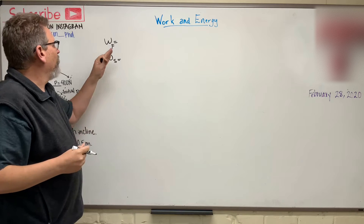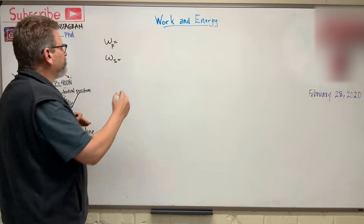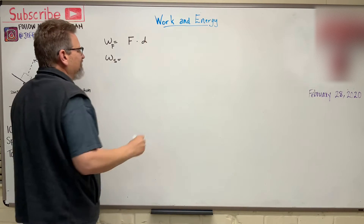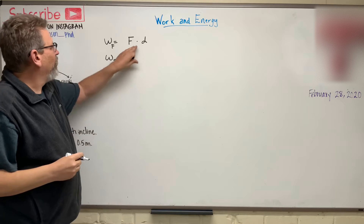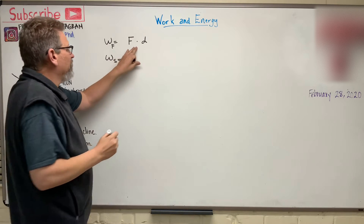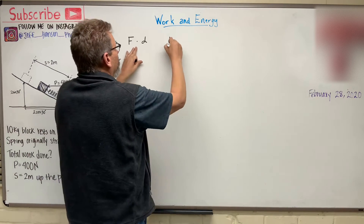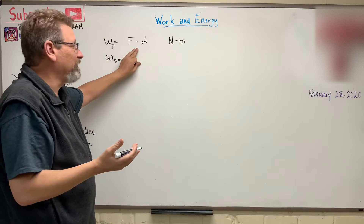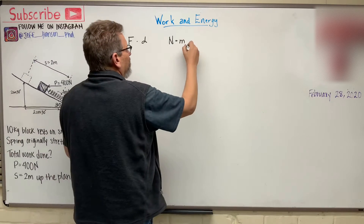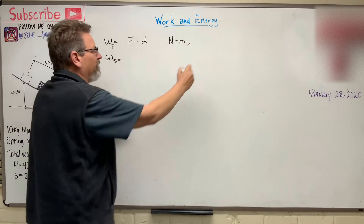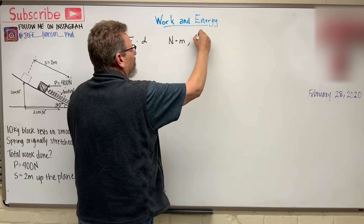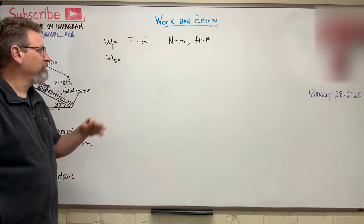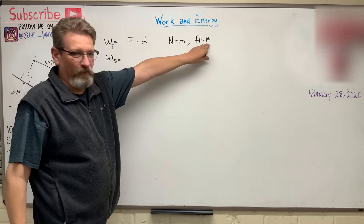The work done by a force is just force times some distance. That's all it is. This gives you units of, in the metric system, newton-meters, or newton-millimeters, or kilonewton-meters. And then in the USCS system — in freedom units — it's going to give you something like foot-pounds or inch-pounds. Some distance times a force.